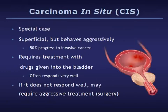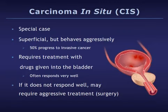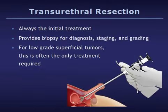Carcinoma in situ, or CIS, is a very special case. In CIS, the cells lining the bladder have become abnormal but have not yet formed a tumor. Instead, a urologist will see distinct raised red patches of bladder lining during cystoscopy. While this is technically a superficial condition, it can behave quite aggressively and must be treated carefully. Fifty percent of these cases may progress to invasive cancer, and because of this, treatment with drugs given into the bladder is required. Fortunately, CIS often responds very well to this treatment, though if it does not respond, more aggressive treatment such as removal of the bladder may be required.